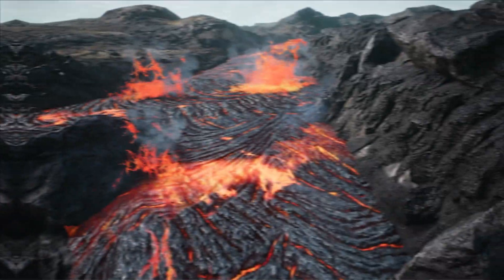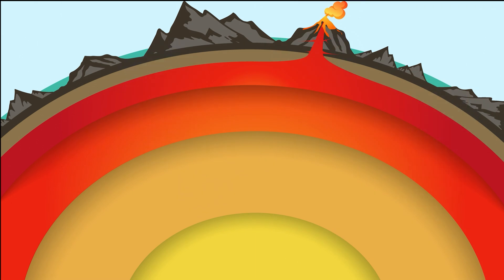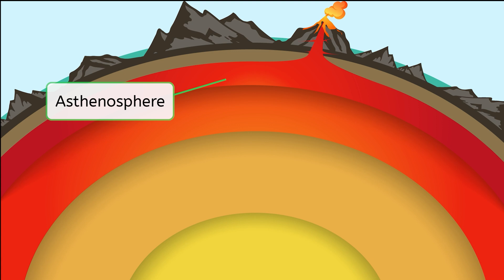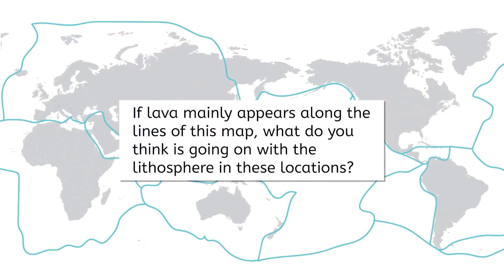Let's think about volcanic activity for a second. Volcanoes mean lava, and geologists, do you know where lava comes from? It comes from magma, or molten rock, within the asthenosphere. However, across most of the planet, Earth's lithosphere prevents lava from escaping. So, if lava mainly appears along the lines of this map, what do you think is going on with the lithosphere in these locations? Pause and record your thoughts in your notes. Geologists concluded that there must be gaps in the lithosphere, creating these hotbeds of activity.